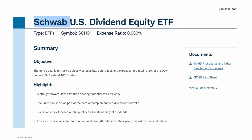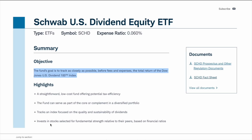According to Charles Schwab, the fund's goal is to track as closely as possible, before fees and expenses, the total return of the Dow Jones US Dividend 100 Index. It's a straightforward, low-cost fund offering potential tax efficiency. The fund can serve as one of the core holdings of your portfolio or complement a diversified portfolio. It tracks an index focused on the quality and sustainability of dividends and invests into stocks selected for fundamental strength.